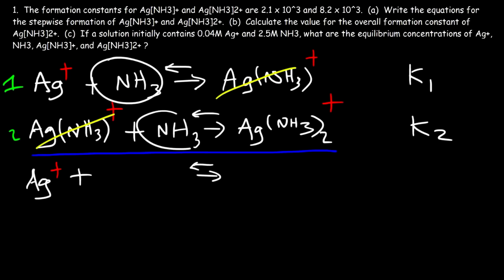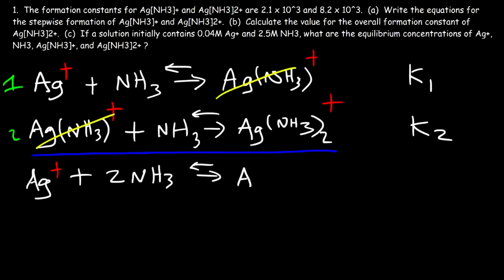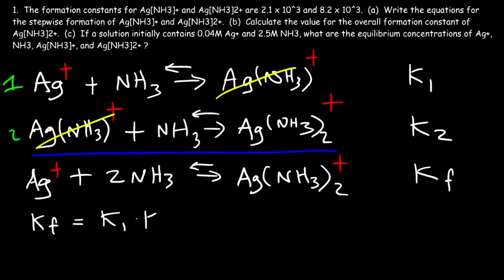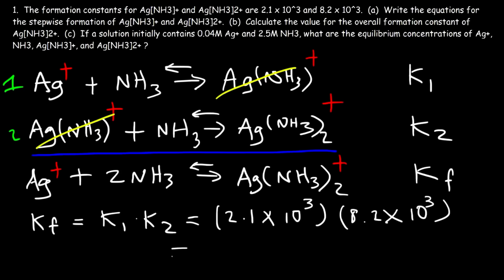Then we have two ammonia molecules, and this gives us the product Ag(NH₃)₂⁺. The equilibrium constant for the overall reaction is Kf. Because we added equations 1 and 2 to get the overall reaction, Kf is simply the product of the first two equilibrium constants. So it's 2.1 × 10³, which is 2100, multiplied by 8.2 × 10³, which is 8200.